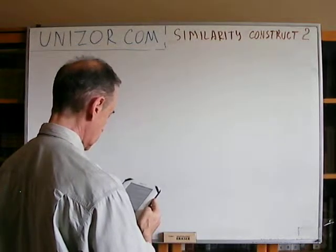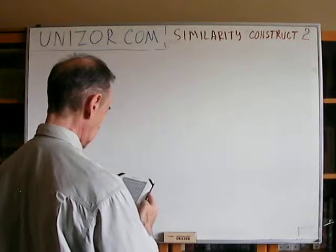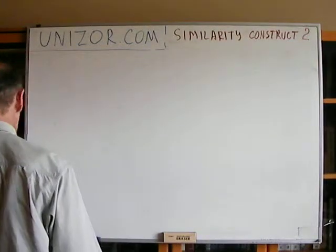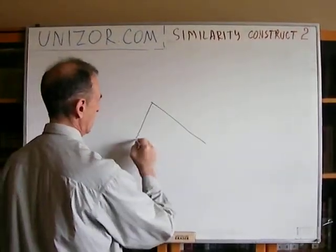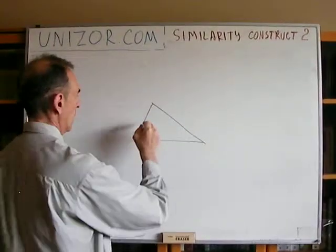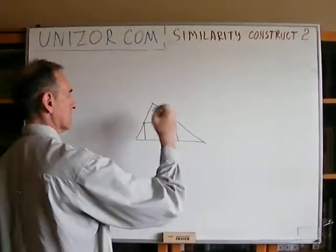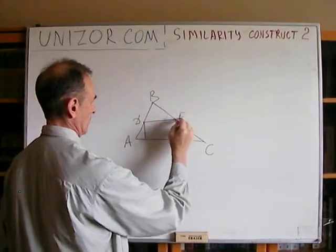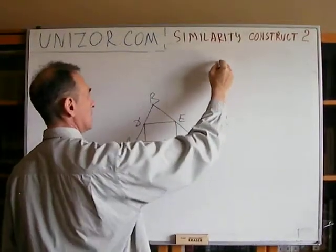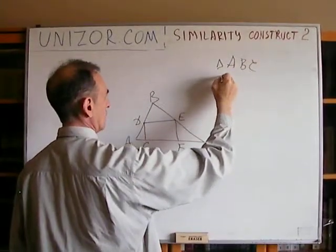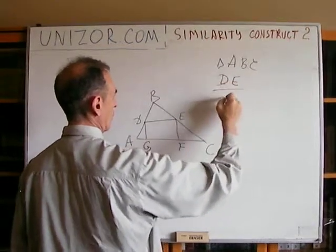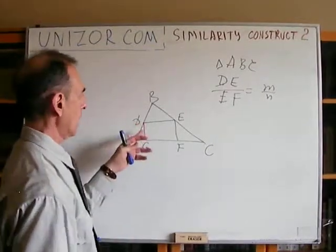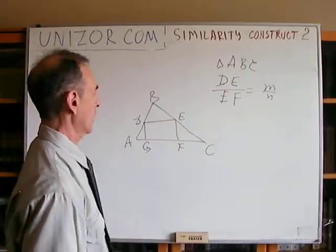Next: inscribe a rectangle into a given triangle such that one side lies on one side of the triangle and two opposite vertices on the other sides, with the ratio of adjacent sides equal to M over N. This is very similar to the square problem, but instead of a square we inscribe a rectangle with prescribed side ratio M over N.